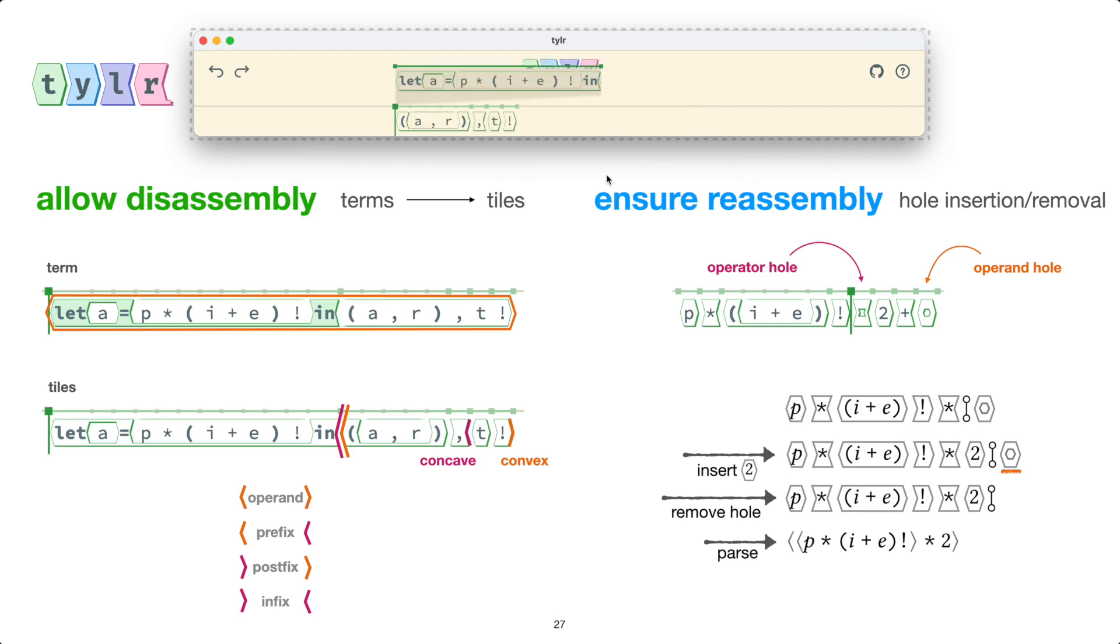But let me undo that for a sec. And let's think about how we might have done that in a text editor. In a text editor, a different way I might have done that is I might have deleted this left parentheses, then moved over to the start of this let tile, and then retype the parentheses there. Tyler supports a similar workflow where I can select that left parentheses, pick it up, move it over and reinsert it in front of the let.